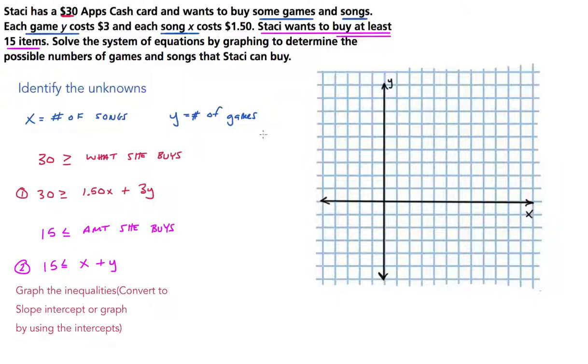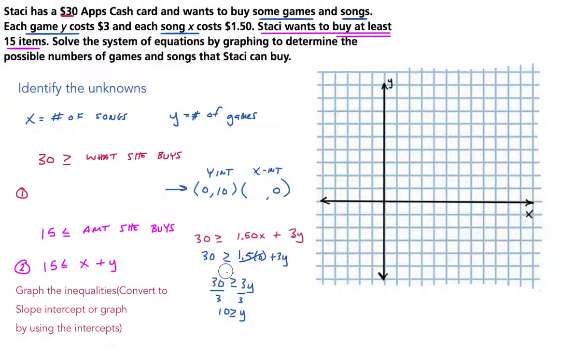The way that you do that is to plot the Y-intercept, which always occurs when the X value is zero and some Y value, and plot the X-intercept, which always occurs when the Y value is zero. If I plug in zero for X, that eliminates the 1.5X term. Plugging in zero for X: 1.5 times zero plus 3Y is less than or equal to 30. So 3Y is less than or equal to 30. Y must be less than or equal to 10.